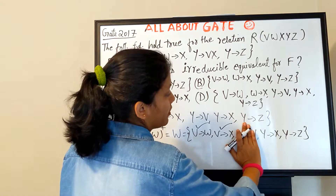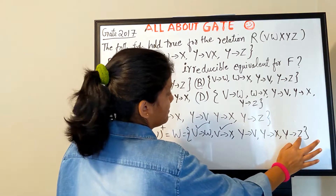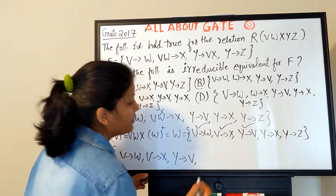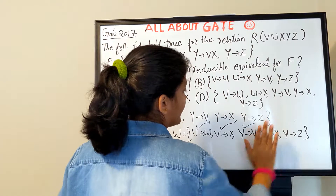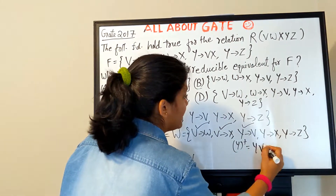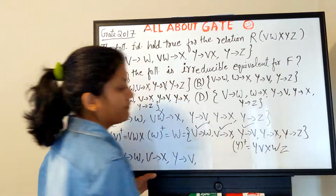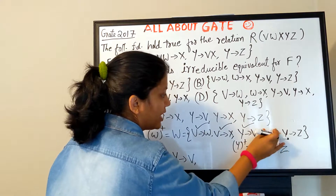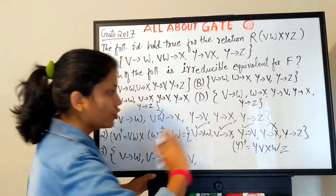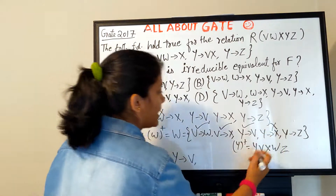Now hide Y→V and compute Y⁺ from the remaining FDs. Y⁺ gives Y, X, Z but does not give V — so Y→V is essential and must be included. Next, hide Y→X and compute Y⁺: without Y→X, Y gives V, V gives X and W, and Y also gives Z. So Y→X can be derived even without that FD — it is not essential and is excluded.